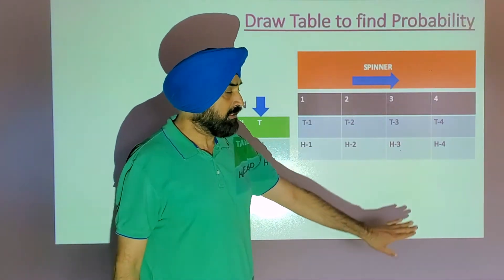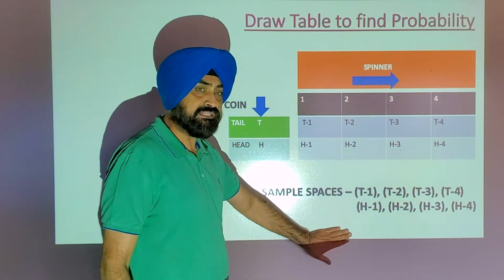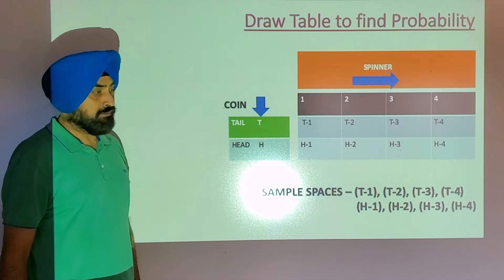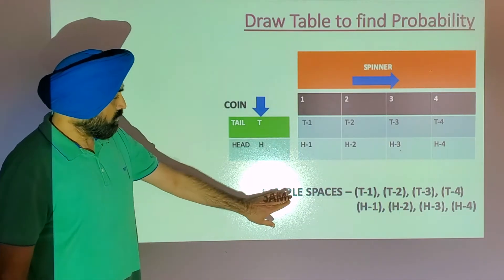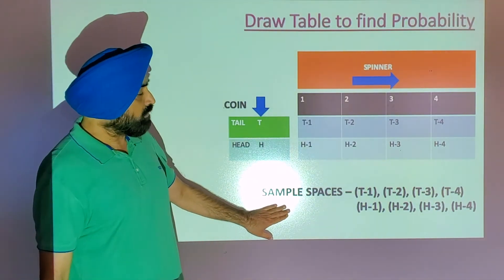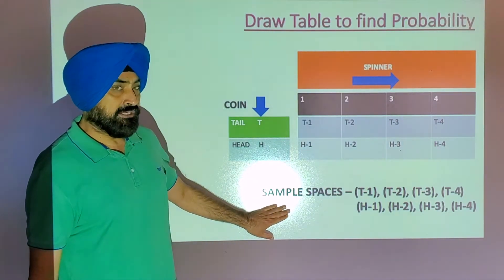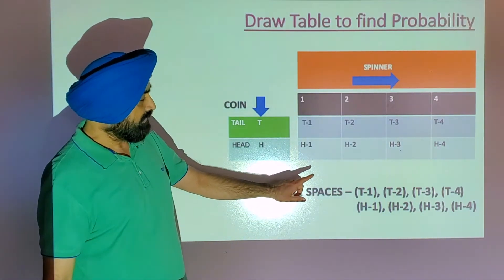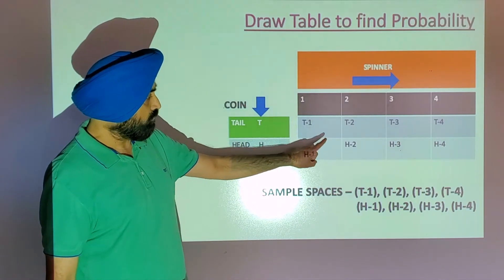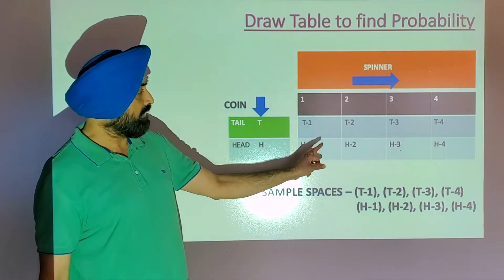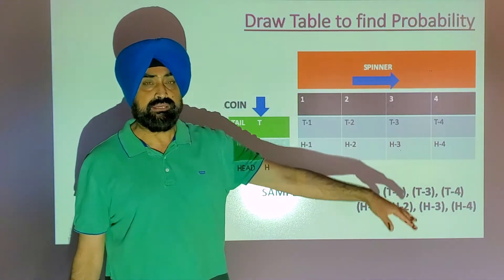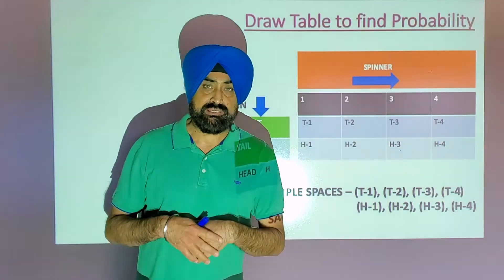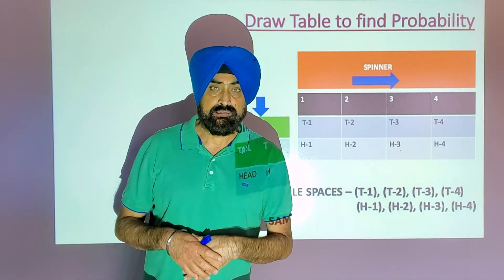These outcomes — T1, T2, and so on — are called sample spaces. These are the total possible chances. Count how many there are: they are total 8 — 1, 2, 3, 4, 5, 6, 7, 8. So total possible chances are 8.